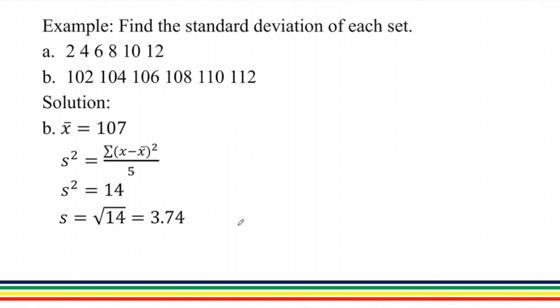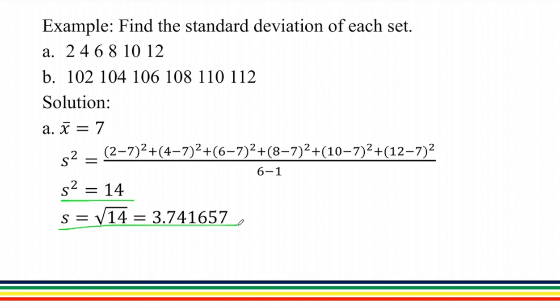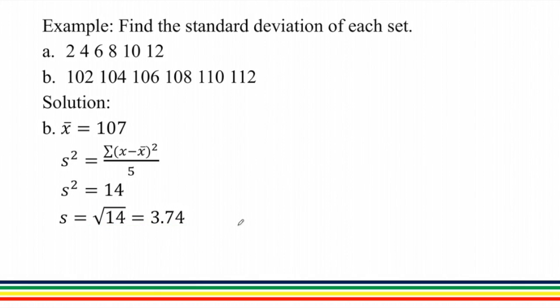For letter b, the mean is 107 and the variance is 14 and the standard deviation is 3.74. If we compare, they have identical variance and standard deviation, but they have a very different data set. It means different data sets can have the same variance and standard deviation.